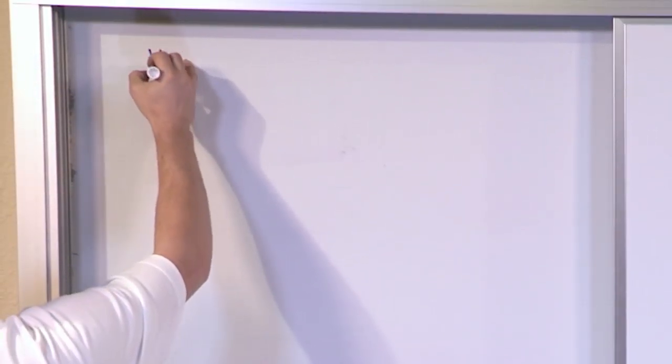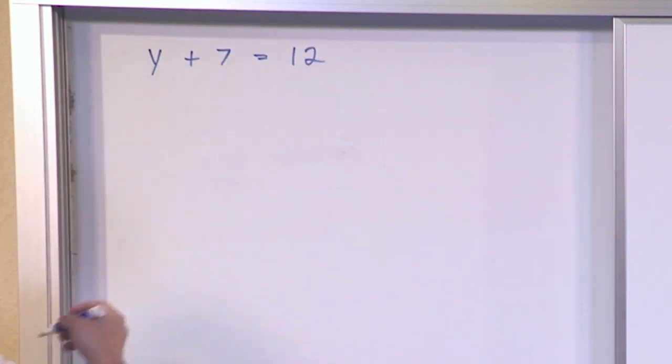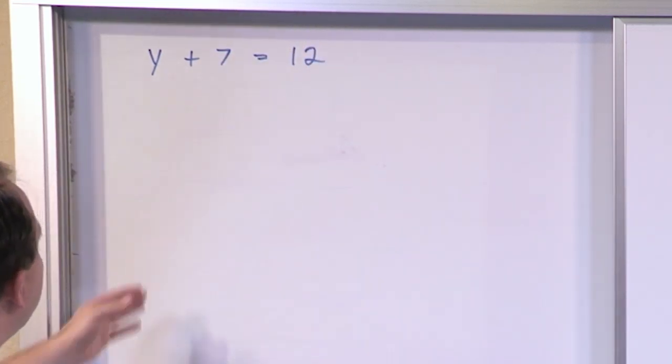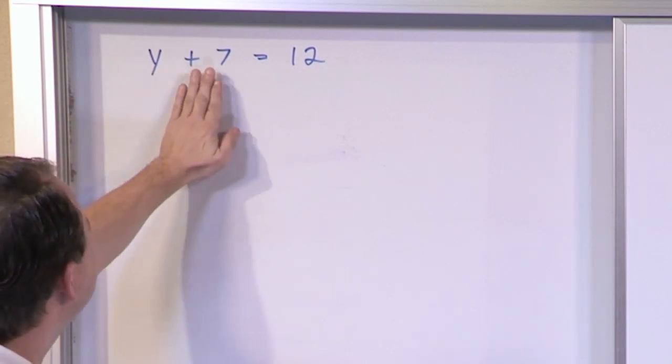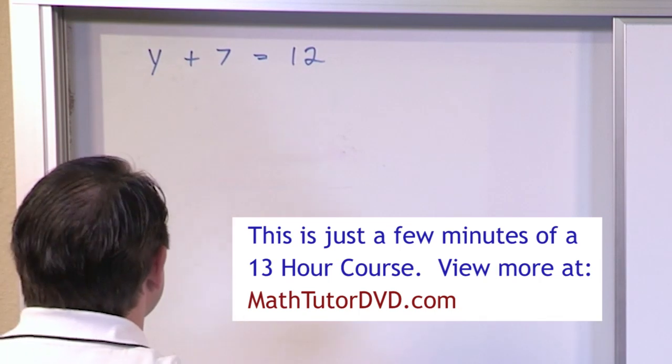All right, so let's say we have y plus 7 is equal to 12. Okay, so how do we solve this guy? The goal is we want to get y by himself. We have this 7 next to him, plus 7, and that is a problem, so we want to get rid of this guy.